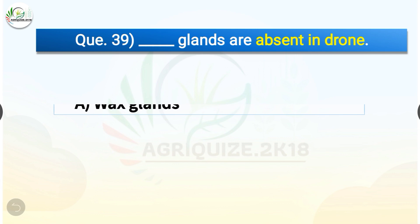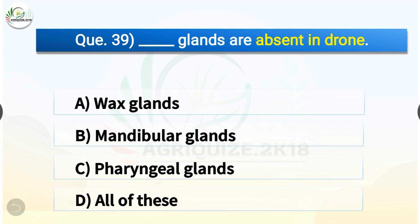Question number thirty-nine: Which glands are absent in drone? The options are: wax glands, mandibular glands, pharyngeal glands, or all of these. The correct answer is option D — all of these. All three — wax glands, mandibular glands, and pharyngeal glands — are absent in drone.